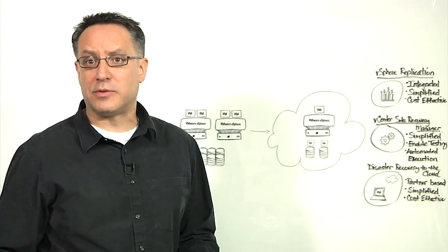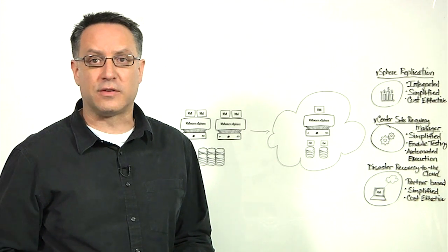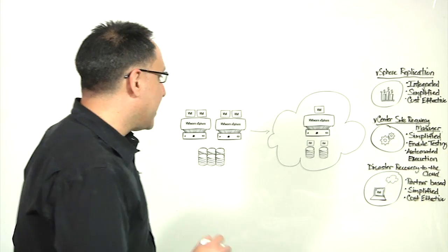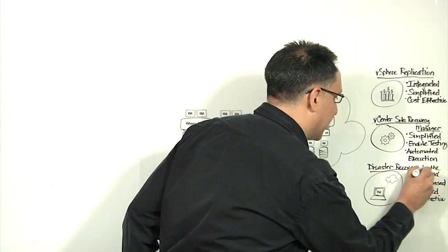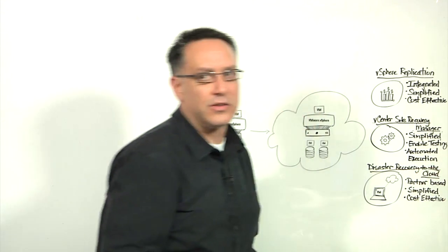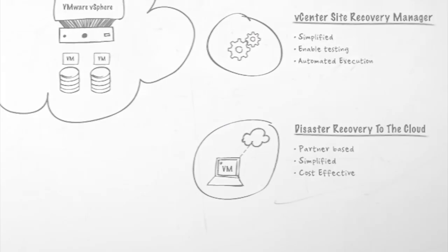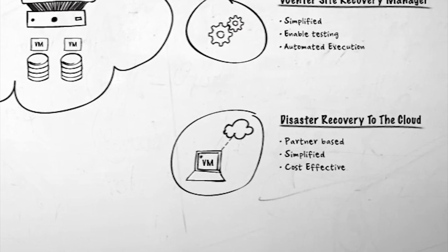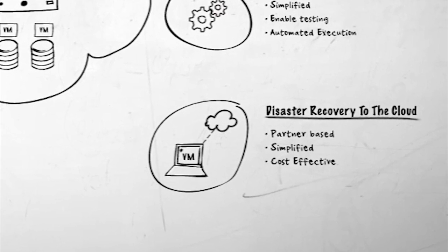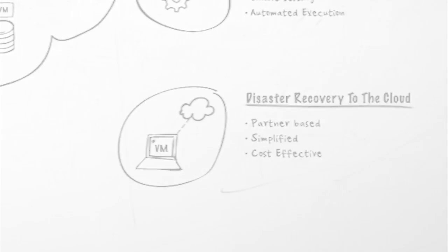The examples up to this point assume that you have a secondary site to replicate your VMs to and failover to in the event of an outage. If you don't have a secondary site to failover to, you can still take advantage of the benefits that vSphere replication and vCenter Site Recovery Manager have to offer. You can do this by taking advantage of the disaster recovery to the cloud solutions that our vCloud service providers have to offer. This is a great option for smaller customers who are looking for options to take advantage of the simplified and cost-effective solutions for disaster recovery from VMware.